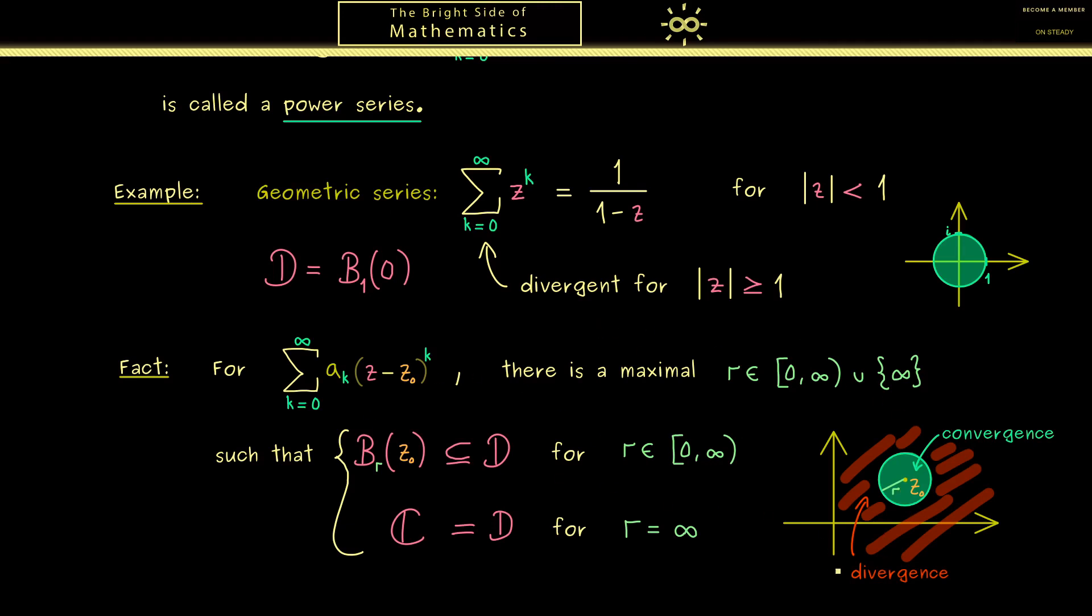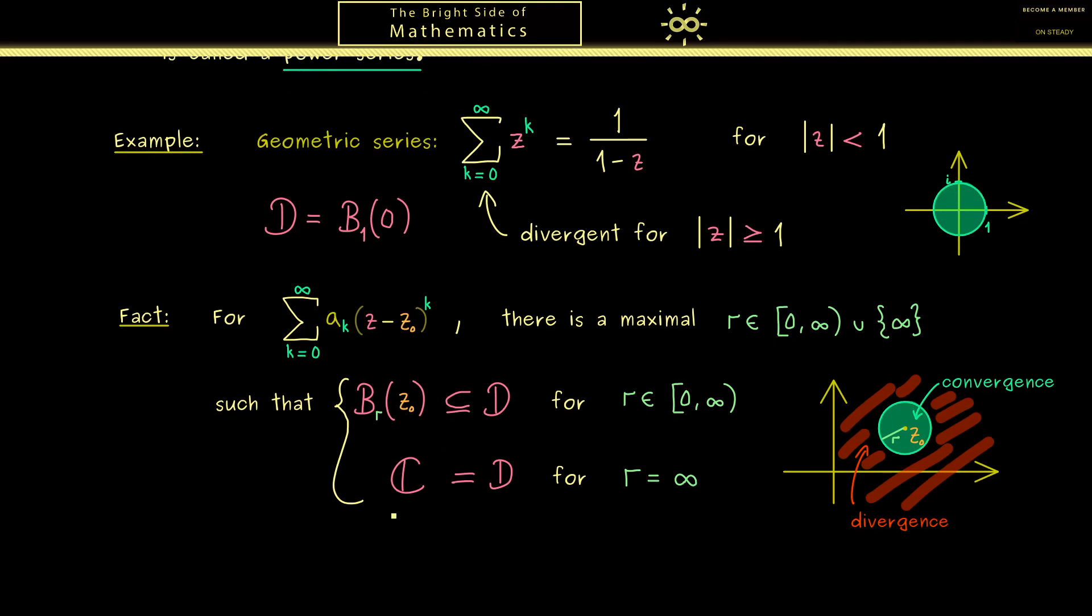Okay then let's state the divergence part here also with a formula. Now the outside in this complex plane here could be described as this z difference. So it simply means that z is not an element of this ball. However then the boundary would be included so we have to exclude this as well.